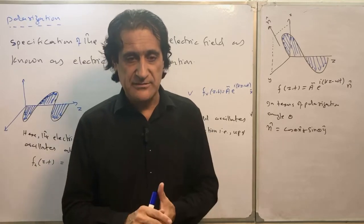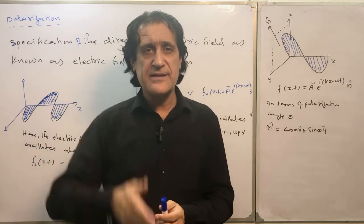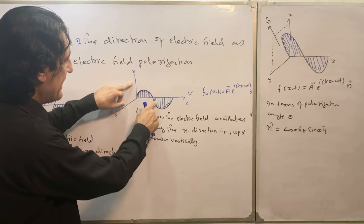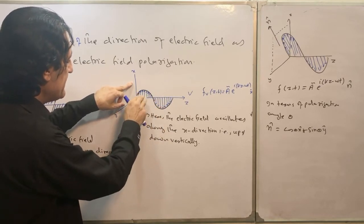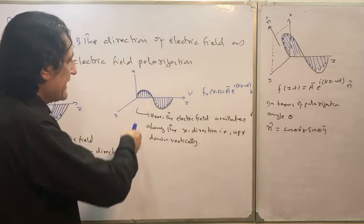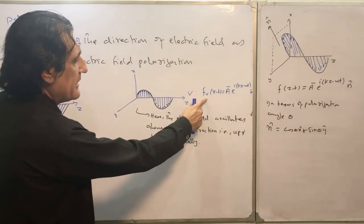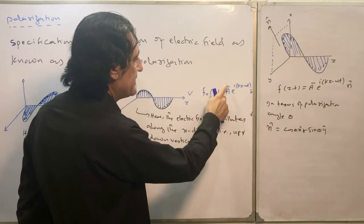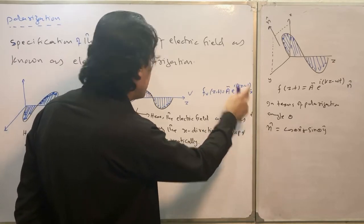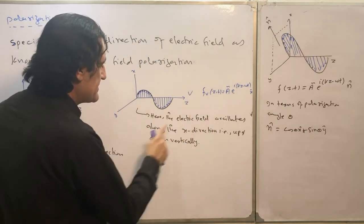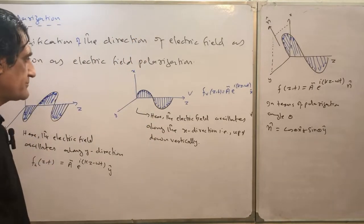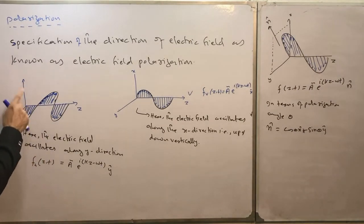Let's suppose the electric field is oscillating along the x-axis — it increases and decreases in this direction — and the changing electric field is along the vertical direction. Mathematically, the wave can be written as A e^(iota(kz − ωt)) in the x-direction. So the electric field oscillates along the x-direction, or up and down.